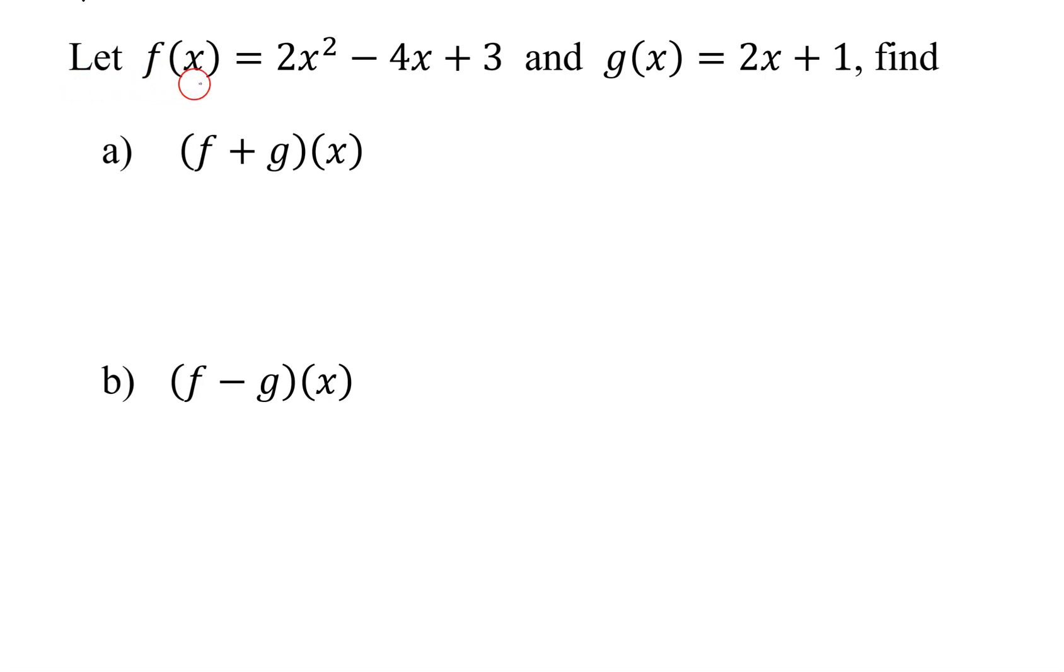In this problem, I'm told f of x is 2x squared minus 4x plus 3, and g of x is equal to 2x plus 1, and we need to find f plus g of x and f minus g of x.